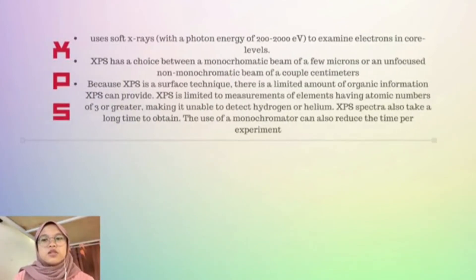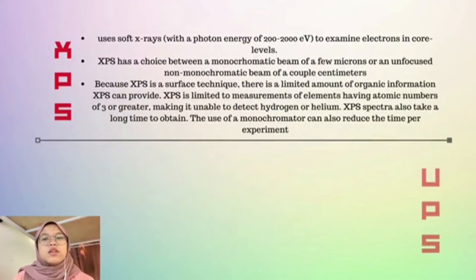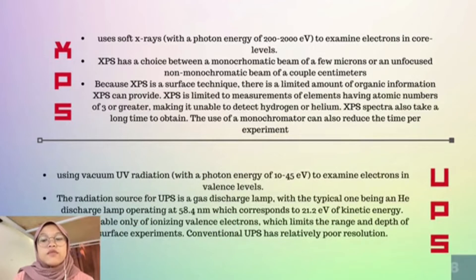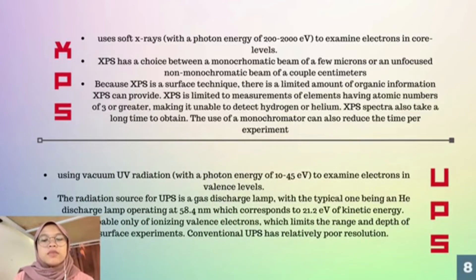XPS uses soft X-ray with a photon energy of 200 to 1000 electron volts, while UPS uses vacuum UV radiation with photon energy from 10 to 45 electron volts only to examine electrons in valence level.